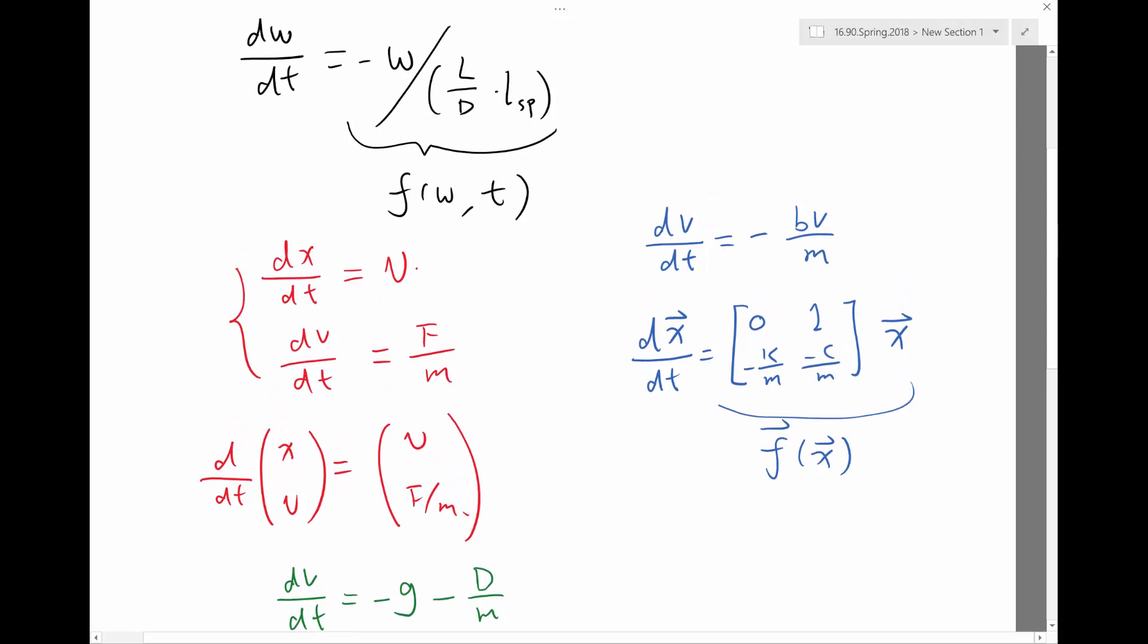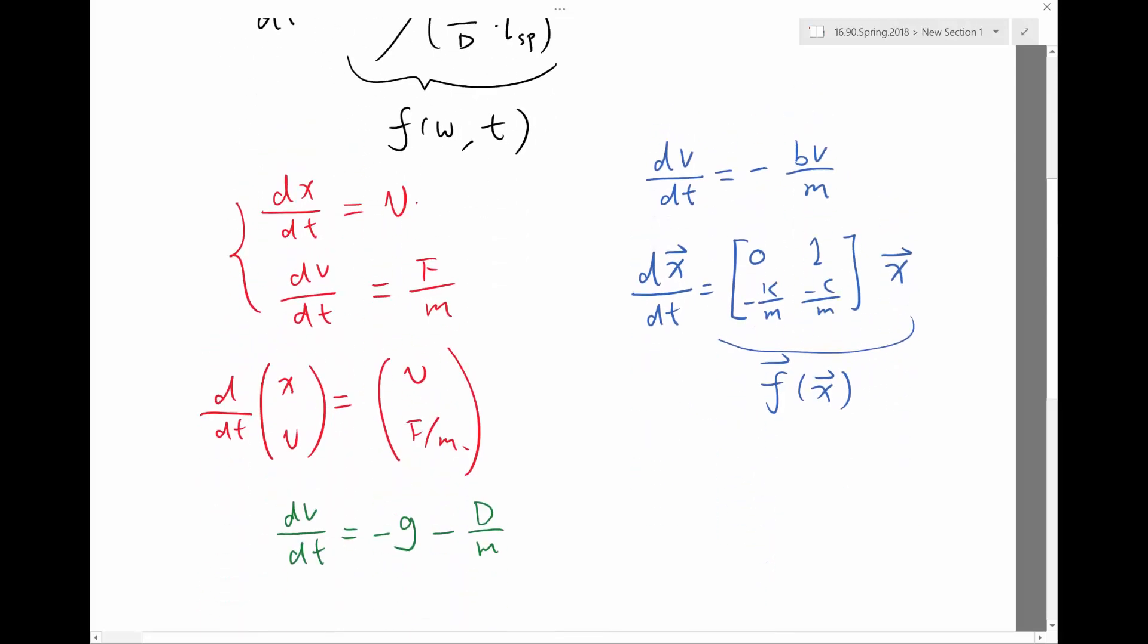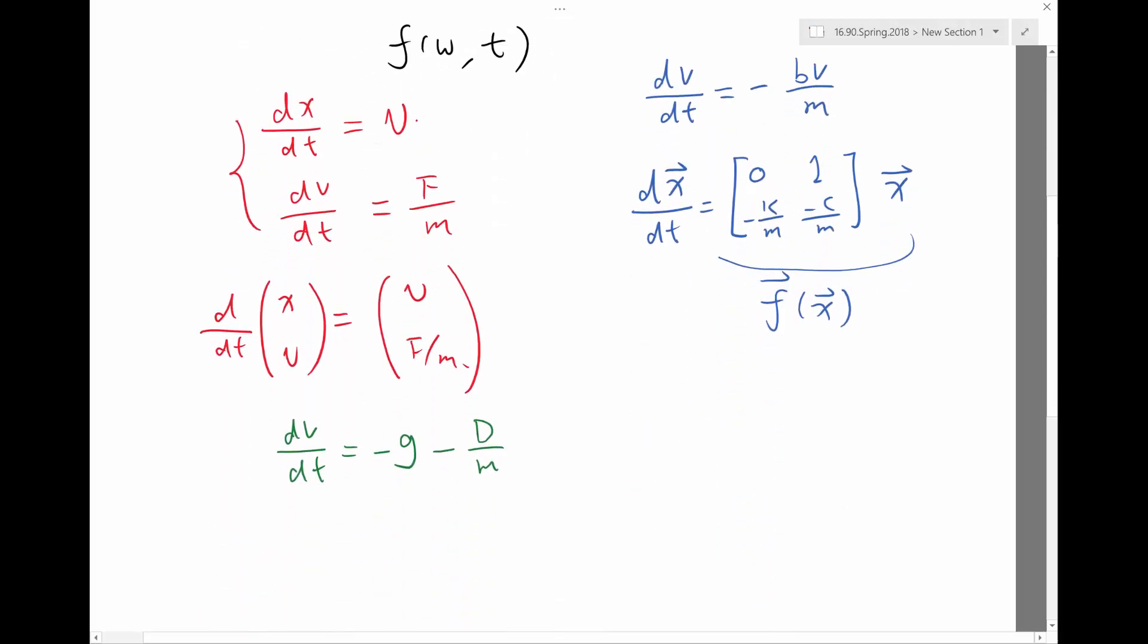So that's a system moving vertically, but with a drag. All right. So D over M is the drag. So this is quite interesting because the drag, presumably, if you follow the simplest aerodynamic model, would be proportional to the square of velocity, right?